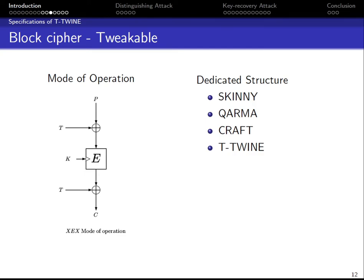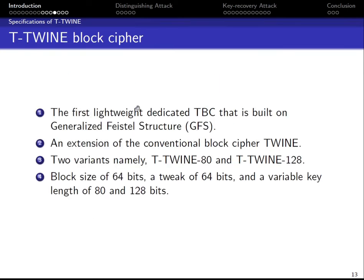In general, there are two approaches to build a tweakable block cipher: the first by using a traditional block cipher in an operation mode, and the second using dedicated constructions such as SKINNY and TWINE. T-Twine block cipher is the first lightweight dedicated tweakable block cipher, built on a generalized Feistel structure. It is an extension of the conventional block cipher TWINE.